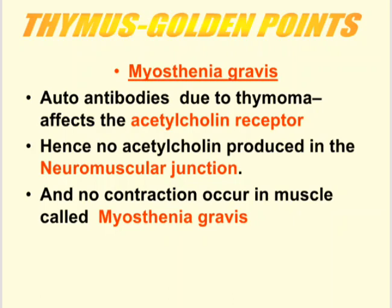Such an autoimmune disease is termed myasthenia gravis. When this disease becomes severe, the person may die due to inability to contract the heart and the chest muscles of the lungs.